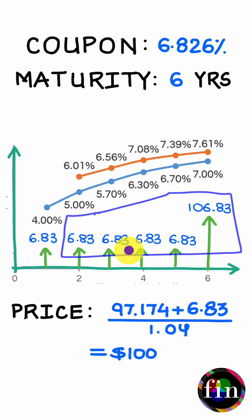Of my bond to arrive at its value one year from today, and this value turns out to be $97.174. To this I can add the year one coupon, and then I can discount the sum of these two using the one-year spot rate of 4% to arrive at the same value of $100.